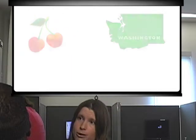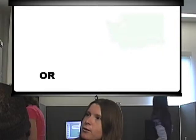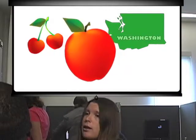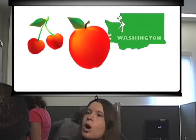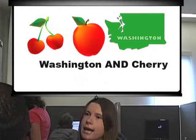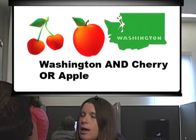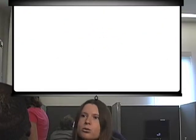There's even another Boolean operator, 'or,' which you could use. Say for instance you weren't just looking at the cherry industry in Washington, you were looking at the apple industry as well. Then you can do Washington and cherry or apple. 'Or' is used when you have two like words or very similar topics.